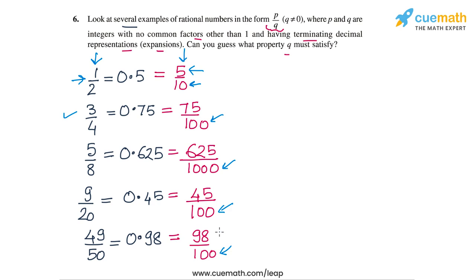This is because when you have a power of 10 in the denominator of a rational number, you just have to count the number of zeros in it and place the decimal point accordingly. The decimal representation will then have as many digits after the decimal point as the number of zeros in the denominator. So you can never get a non-terminating recurring decimal if the denominator of the rational number is a power of 10.